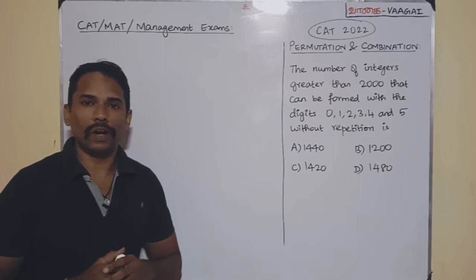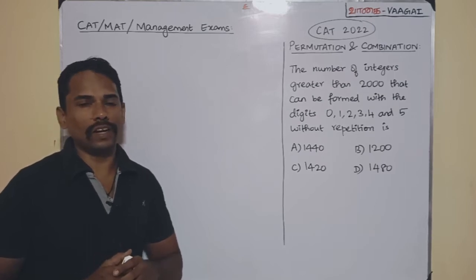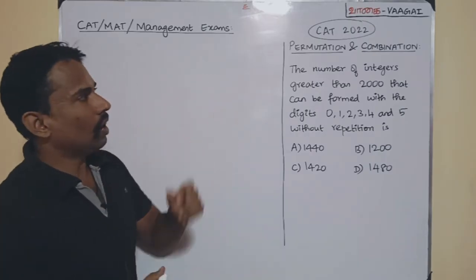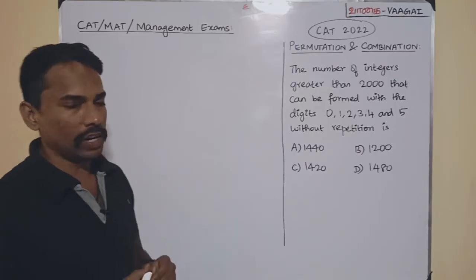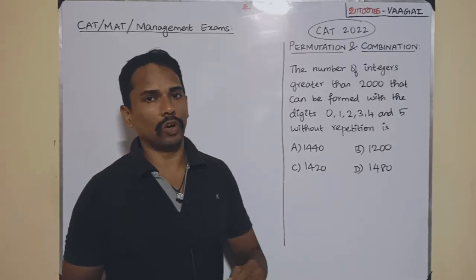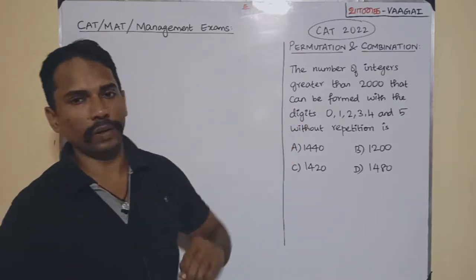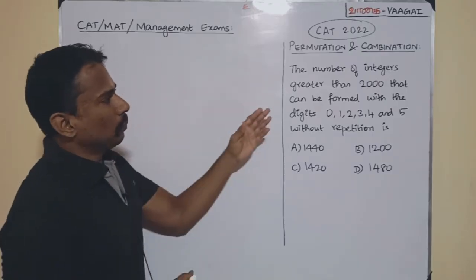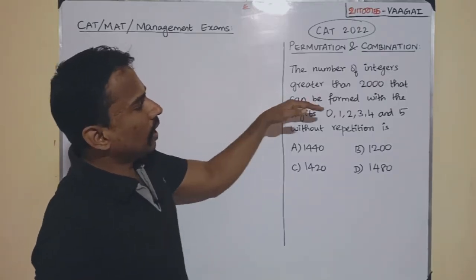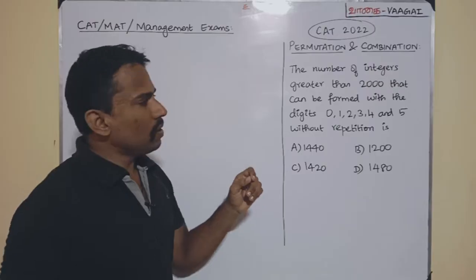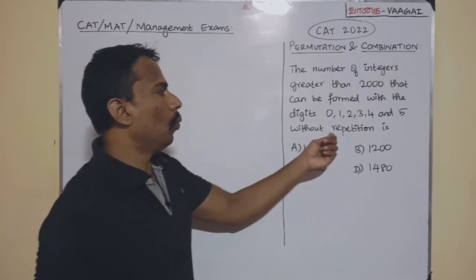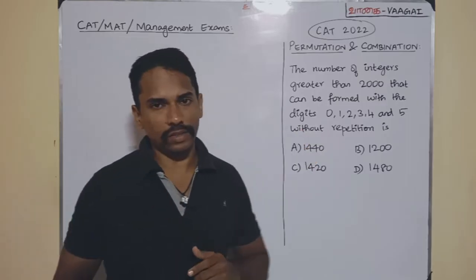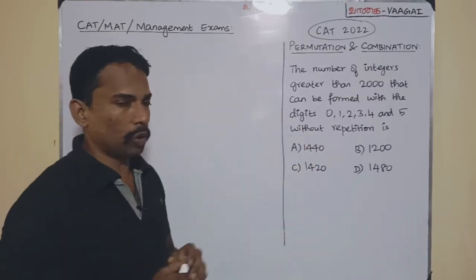Hi and hello, welcome back to Vagai Academy of Mathematics. This session we have a problem from CAT 2022 from the concept of permutation and combination. The question: the number of integers greater than 2000 that can be formed with the digits 0, 1, 2, 3, 4, and 5 without repeating the digits.